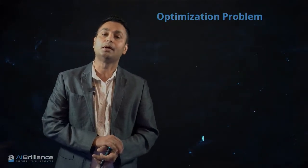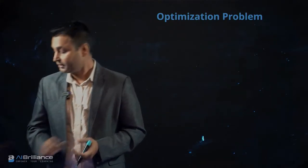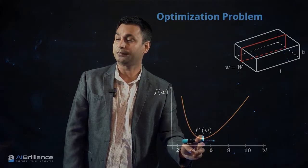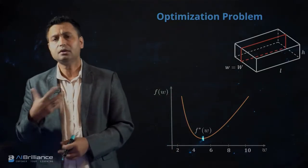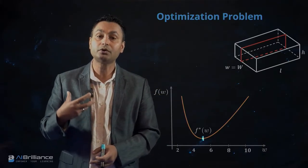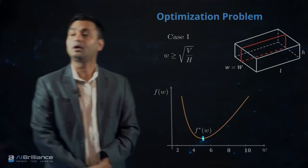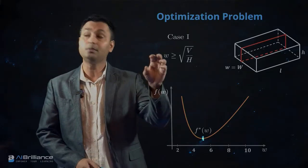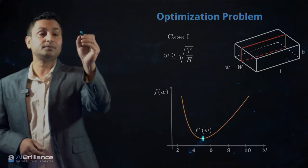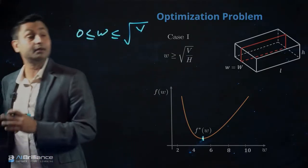Let's consider some other salient aspects of this optimization problem. Taking the same tray example, we have this function plot and we know it has an optima. One of the things we can think about is how the solution space changes with additional information — for instance, finding all solutions where w has to be greater than root over v/h. In the previous case without that specification, the solution had w less than or equal to root over v/h up to infinity.